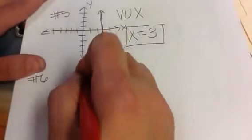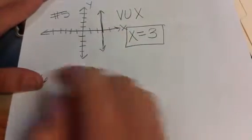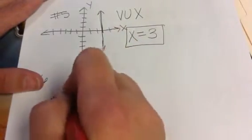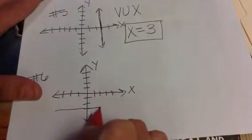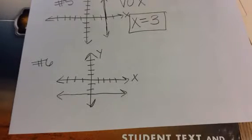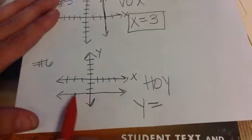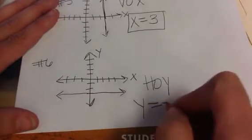Number six: draw this graph on your paper and decide if it's a HOY or a VUX. This is a horizontal line, so it's a HOY. That means the equation is in the form Y equals a number. What does Y equal for this line? Y equals negative three is your answer.